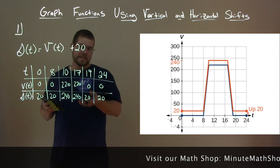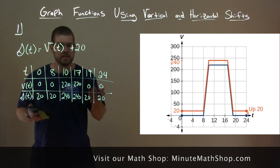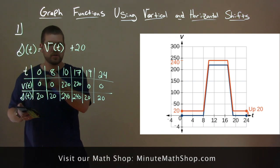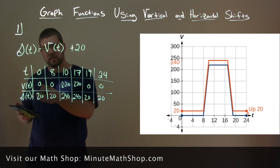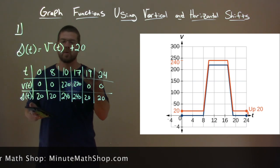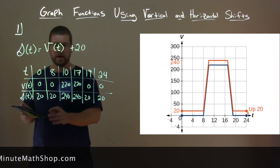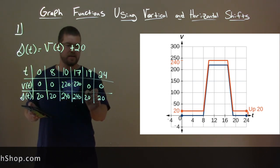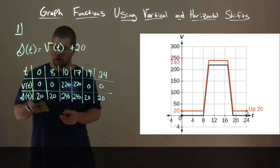Now we can see from our graph how it matches the table. The table values show each value of v of t, and then s of t has 20 added to it. So we can see in table form that each one is added by 20.